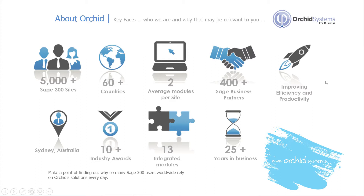First of all, we have over 5,000 sites. They're scattered in over 60 countries around the world with, on average, two modules per site. These modules are deployed by and supported by over 400 Sage business partners around the world, and we're based in Sydney, Australia.